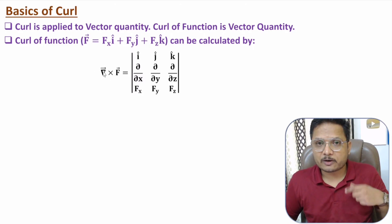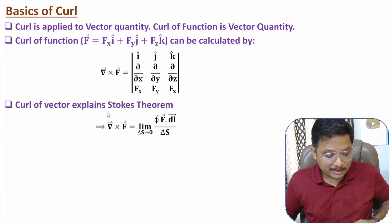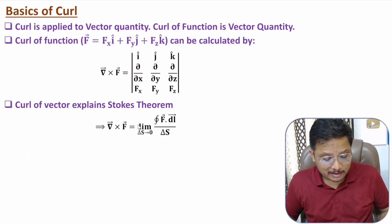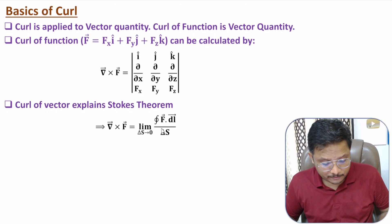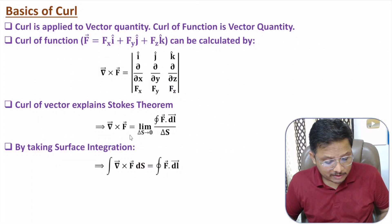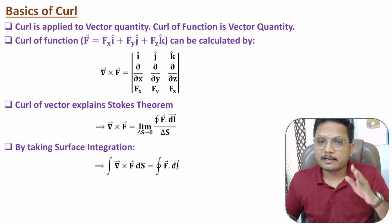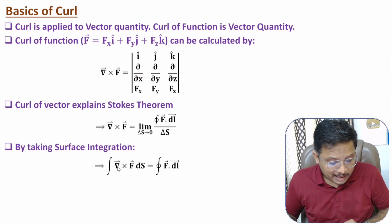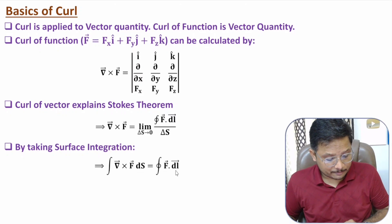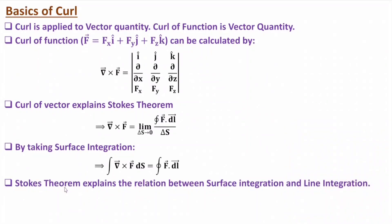Now I need to explain Stokes' theorem. Based on curl of function, Stokes' theorem states that del×F, by mathematical definition, equals the limit as delta-S tends to zero of the line integration of the function divided by delta-S. If you take the surface integration, then surface integration of curl of F equals the line integration of the function. So Stokes' theorem explains the relationship between surface integration and line integration.